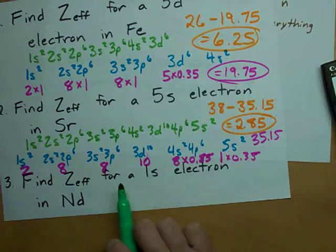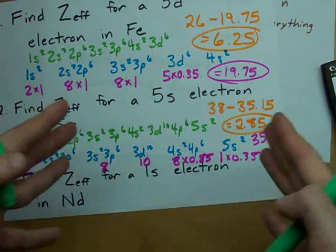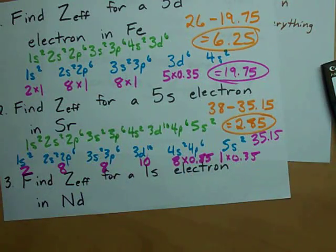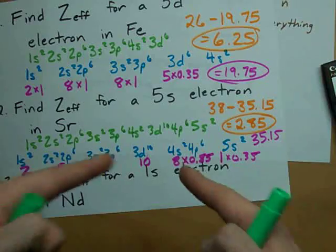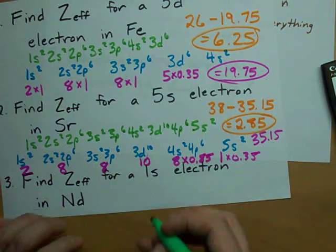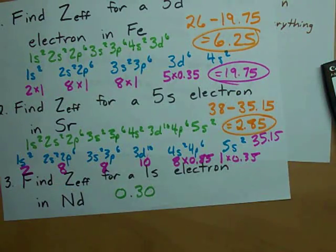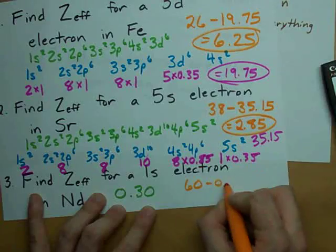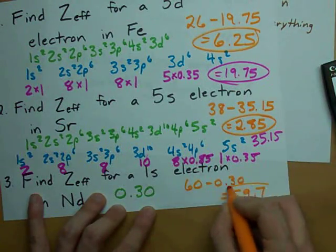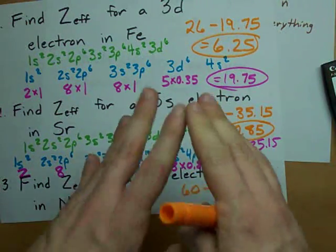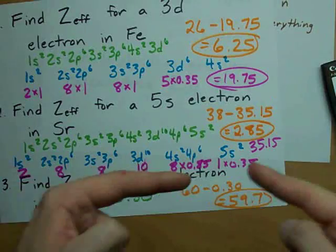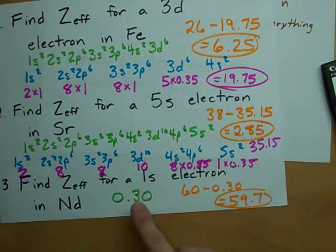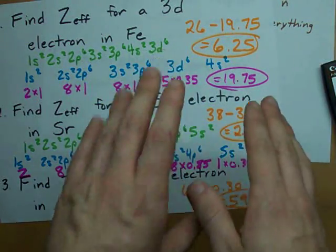None of the electrons in shells farther than the 1s are going to count because they're outside and they're not blocking the 1s electron's view of the nucleus. The only thing blocking a 1s electron's view of the nucleus is the other 1s electron. And that other 1s electron always contributes 0.3. So the effective nuclear charge for a 1s electron in neodymium is 60, atomic number, minus the total shielding, 59.7. Obviously, the 1s electron sees almost all of the protons because it's got the front row seat. The only thing blocking it is sometimes the other 1s electron.